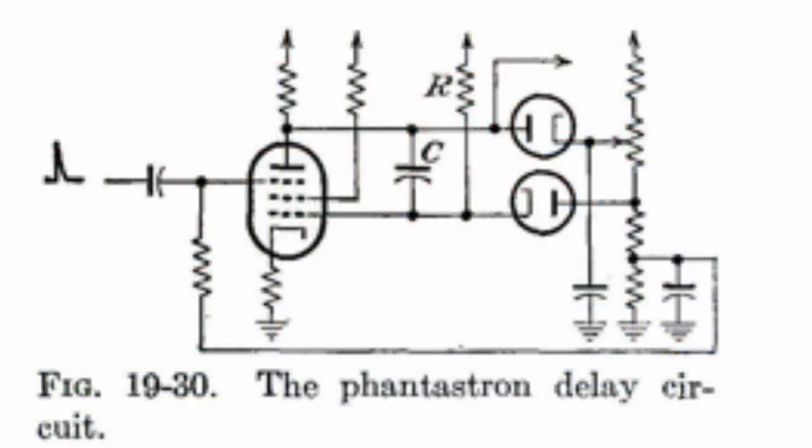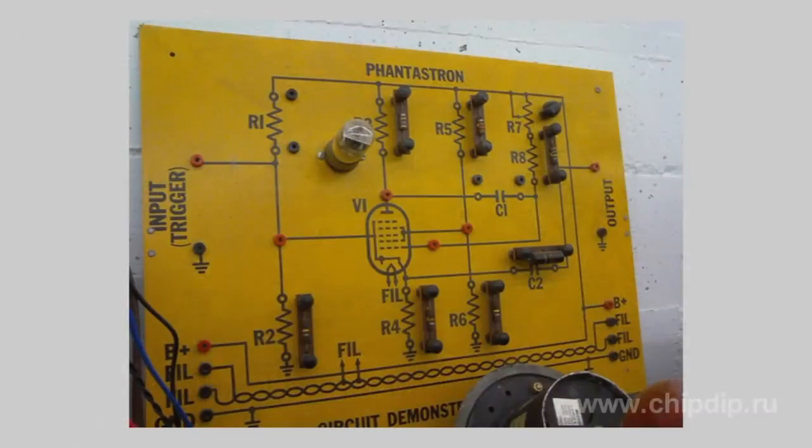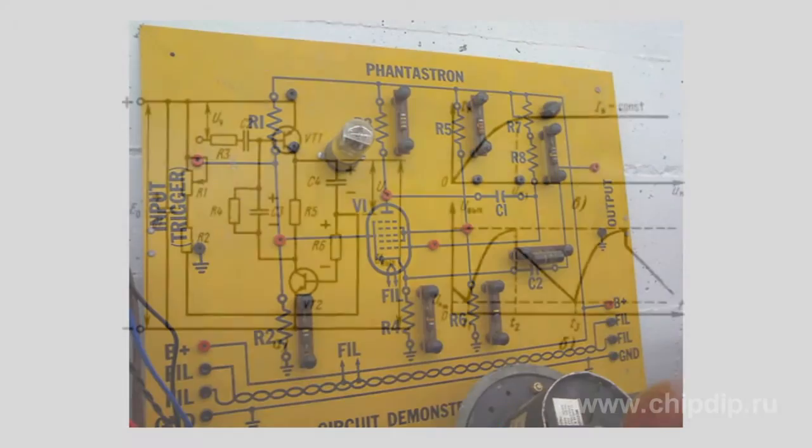Phantastron with a large difference of change in voltage is performed on electronic tubes, usually pentodes and pentagrids, with a smaller voltage drop on bipolar or field-effect transistors.